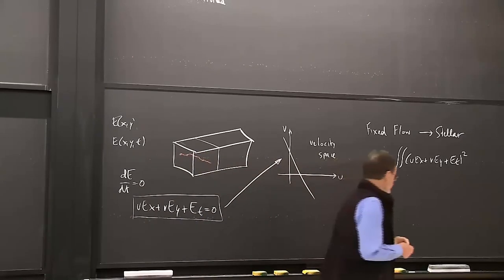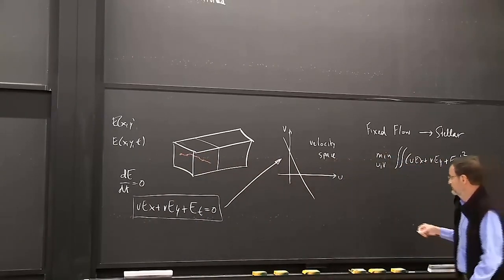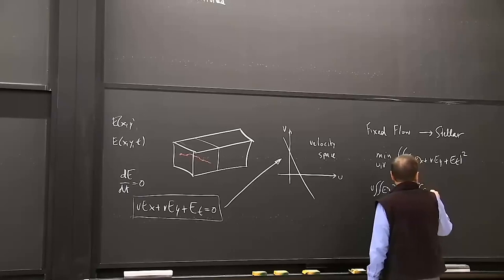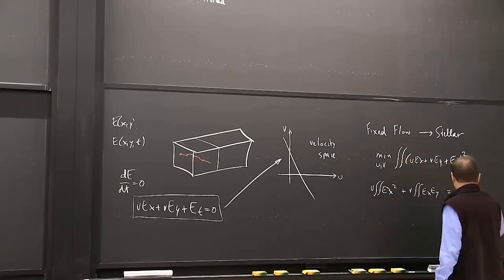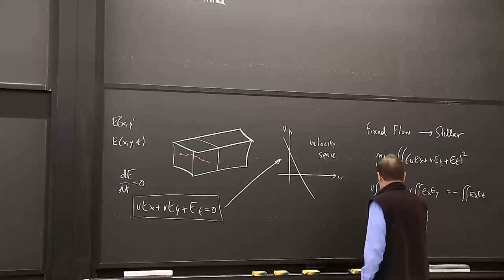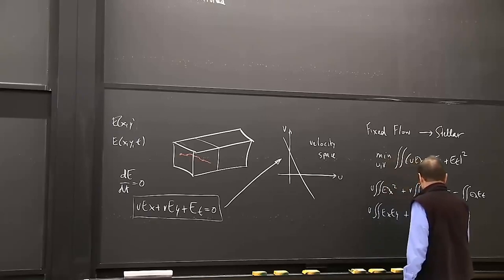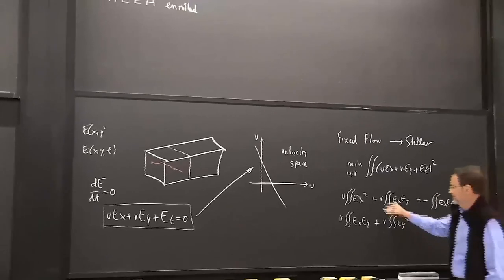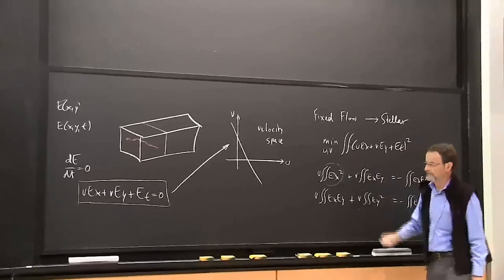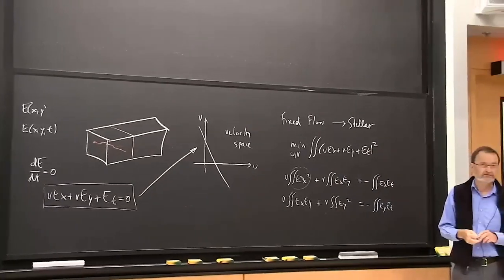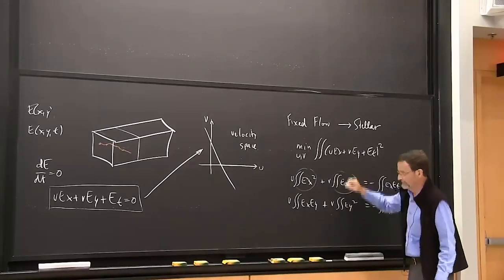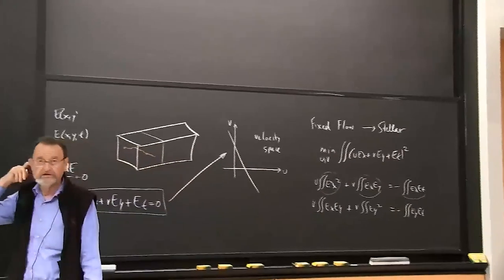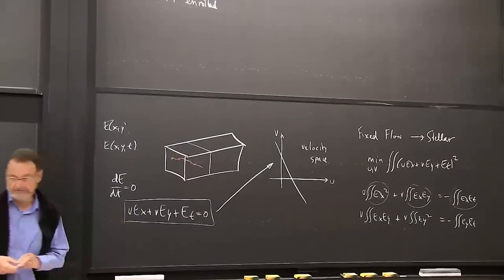Doing that minimization, we obtain a linear equation in the unknowns with a symmetric 2×2 coefficient matrix. We run through the image, estimate the gradients ex and ey and the rate of change of brightness et, accumulate the totals, and end up with two linear equations in u and v, which we know how to solve.